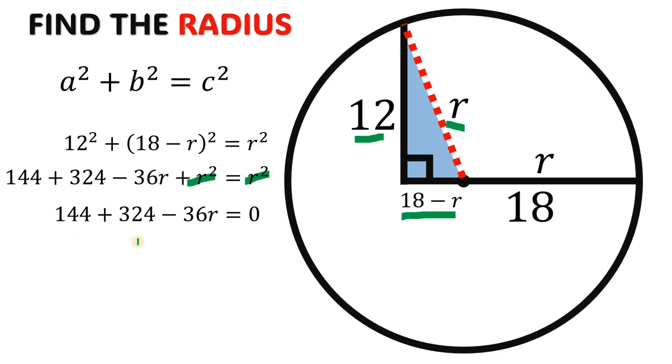Now add 144 and 324. This will give us 468. Now add 36r on both sides, and then divide all of this term by 36. We get that the value of r simply equals 13, and that is the radius of this circle.